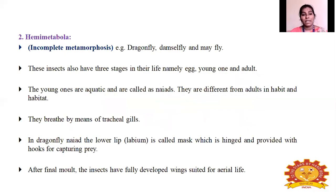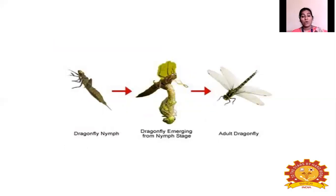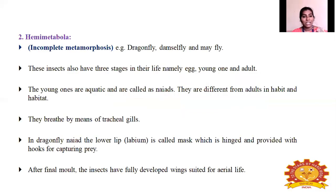The second type is Hemimetabola, otherwise called incomplete metamorphosis. Examples are dragonfly, damsonfly, and mayfly. Here these insects also have three stages in their life — namely egg, young one, and adult. The young ones are aquatic and are called naiad.